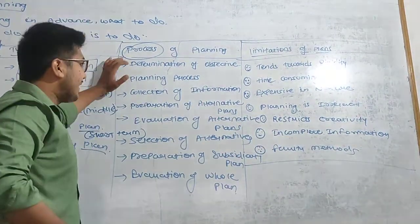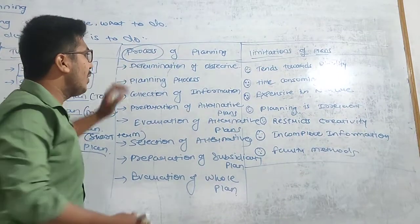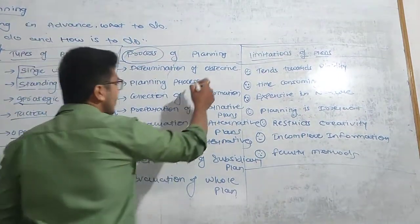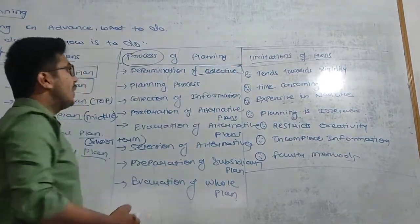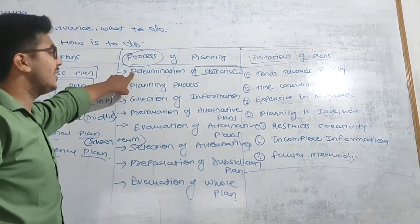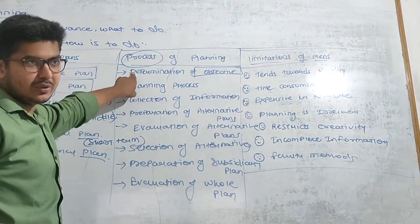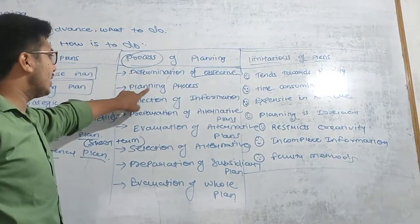Before making a plan, managers must know about the objectives of the business. Business objectives — this is known as the determination of objective. First, managers will decide the objective.